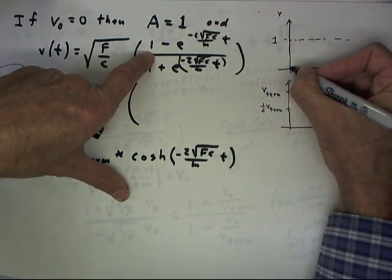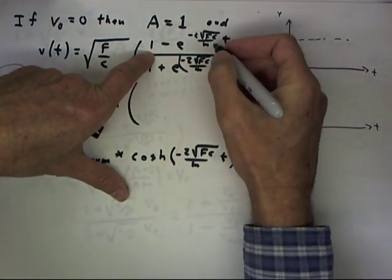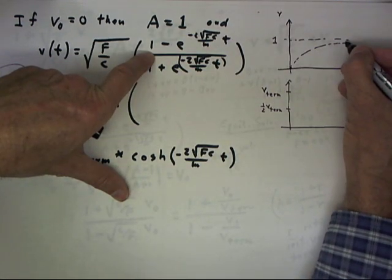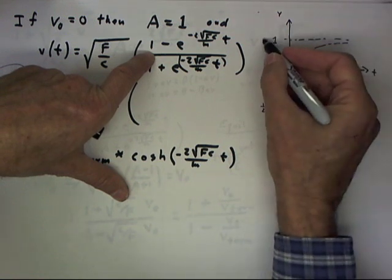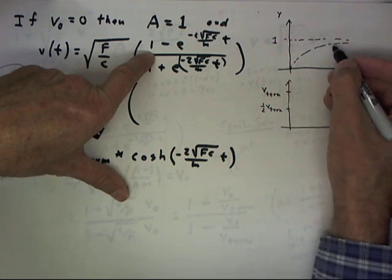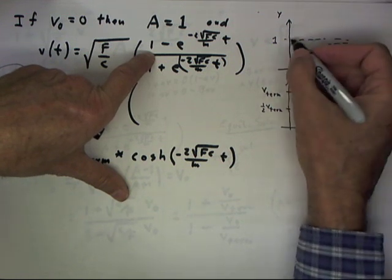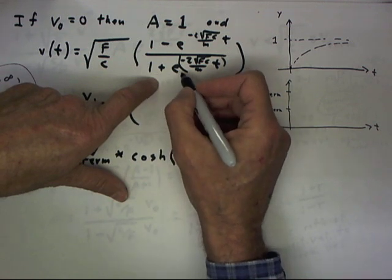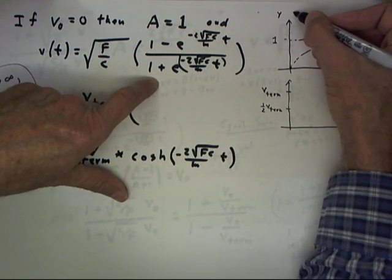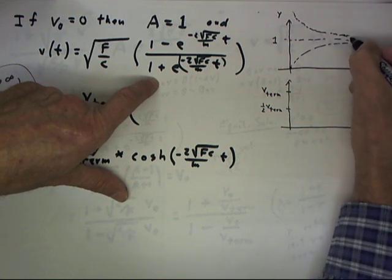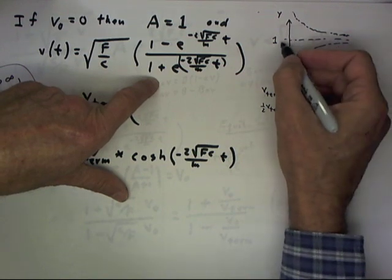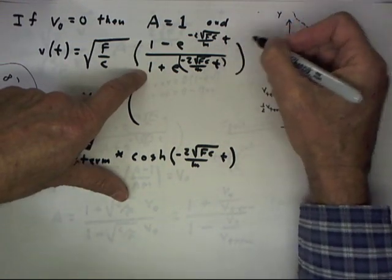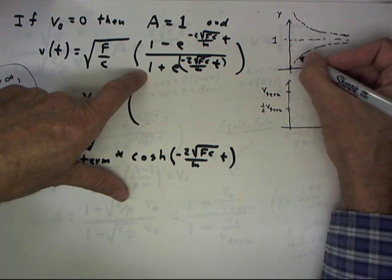If we look at the numerator function, it starts at 0 and as t approaches infinity it approaches value 1, so we expect this graph to have that characteristic shape — like a flipped decreasing exponential approaching 1 as its asymptote. The denominator function has value 2 when t equals 0 and approaches y equals 1 as t approaches infinity. So this full expression is this numerator function divided by this denominator function.